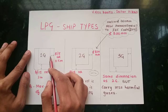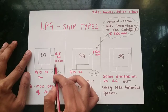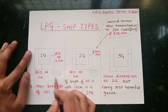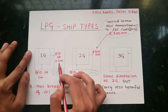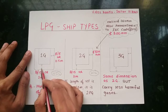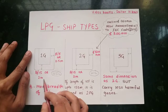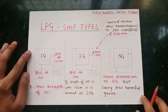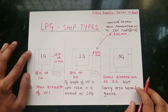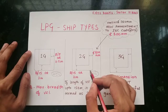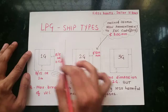The topside distance will be B/5 or 11.5 meters, whichever is less. The distance between the keel and the tank top will be B/15 or 2 meters, where B is the maximum breadth of the vessel. These values are the same for certain ship types, but the top value differs for 2G.